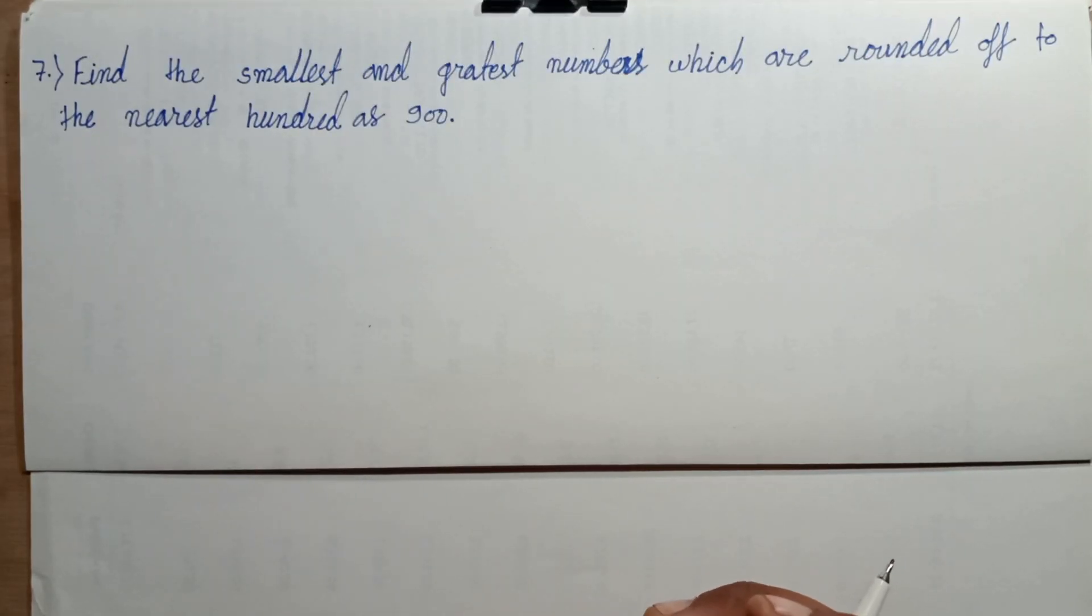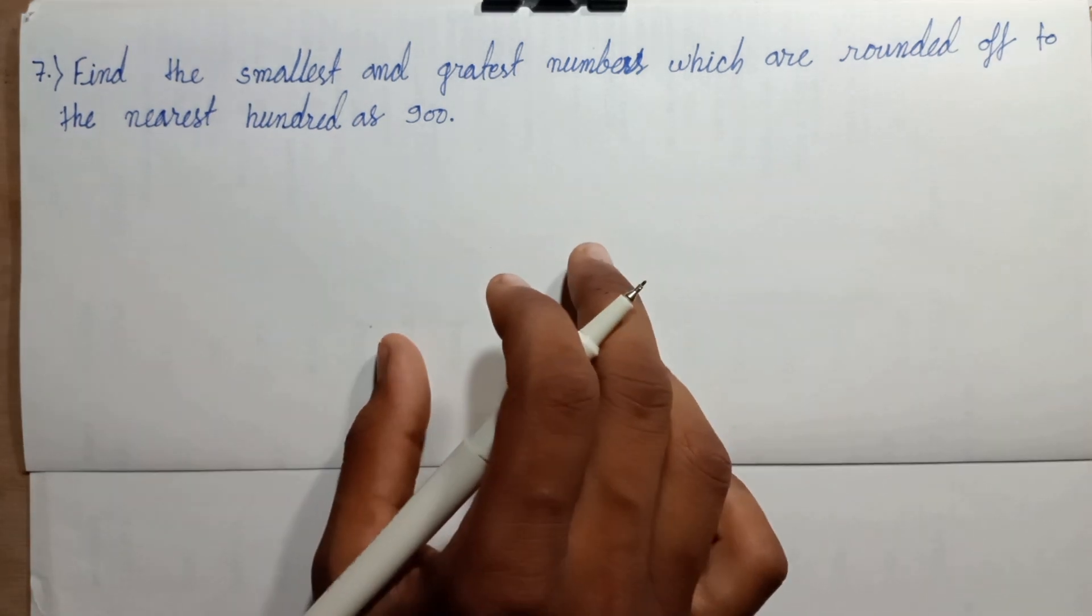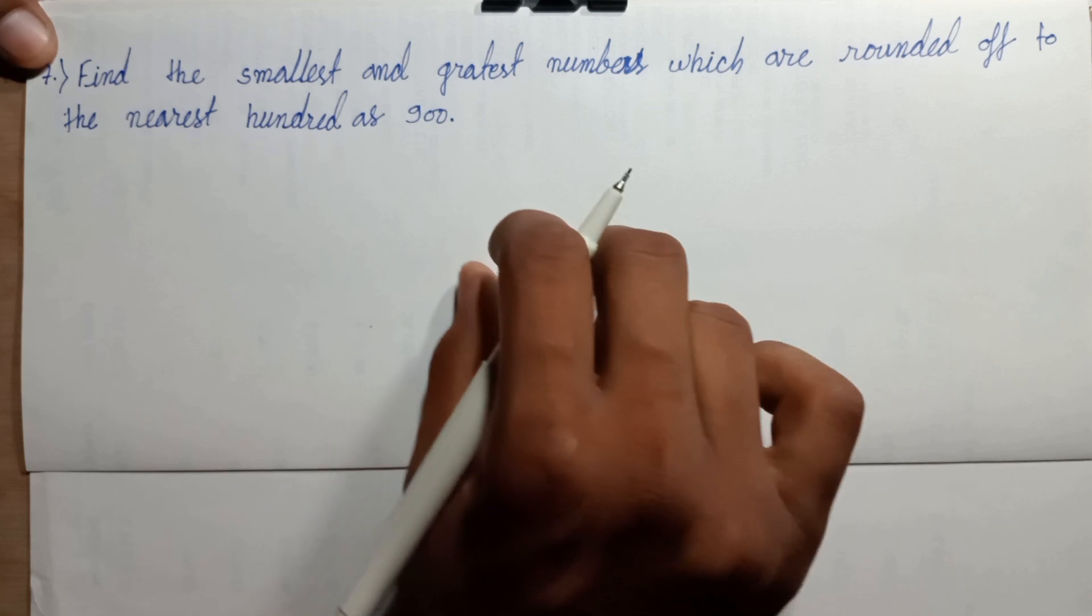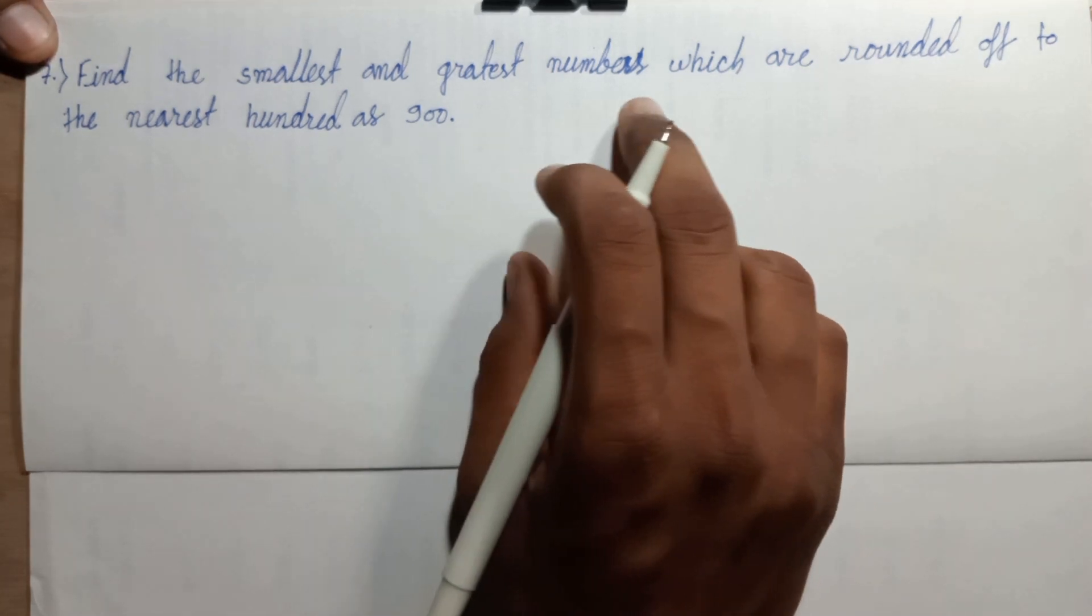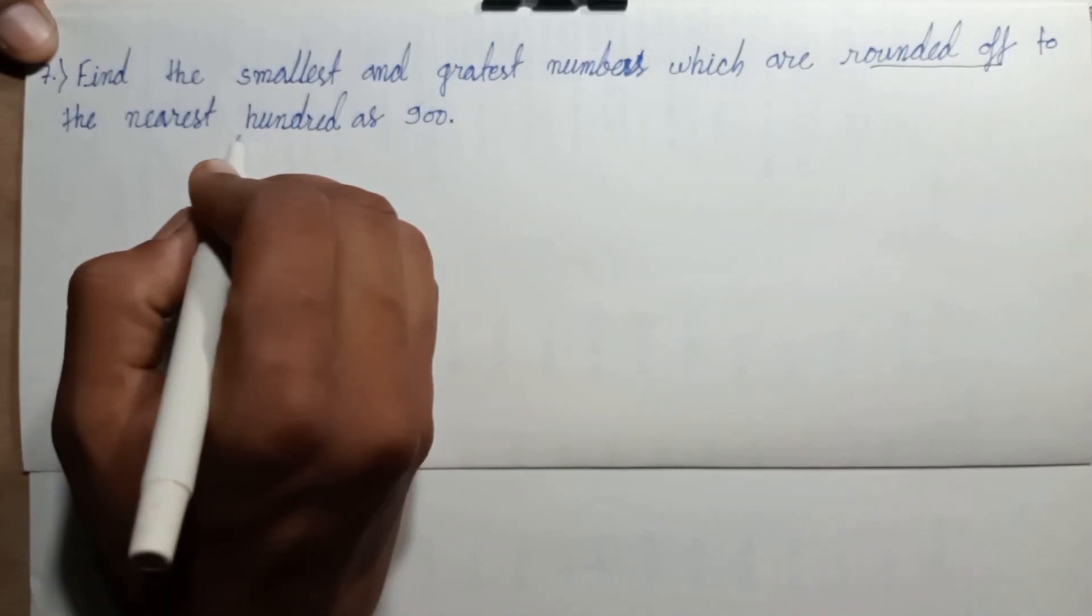Vande Mataram everyone, welcome back to this episode. This episode discusses exercise 1.6 question number 7. Find the smallest and greatest number which are rounded to the nearest hundred.